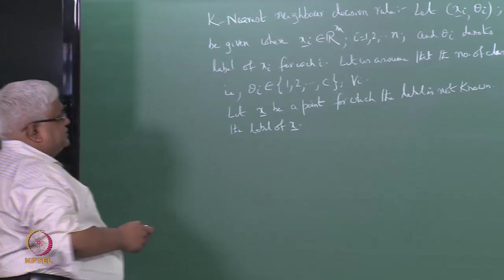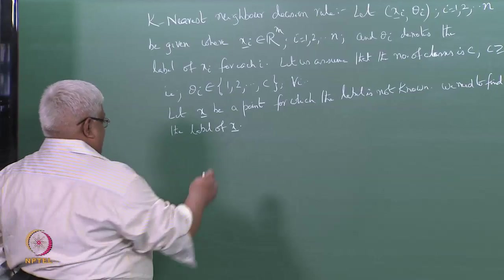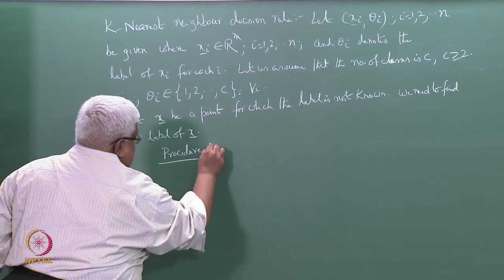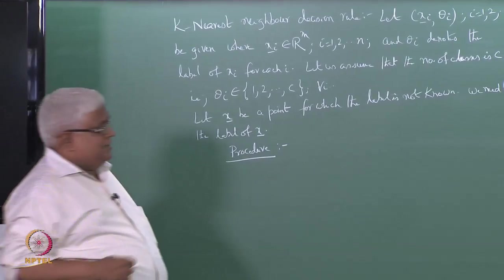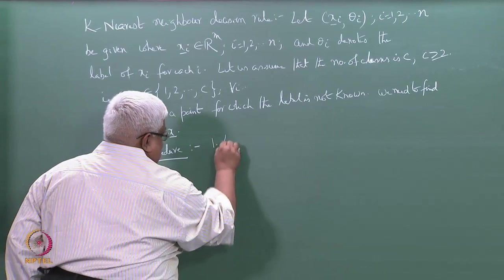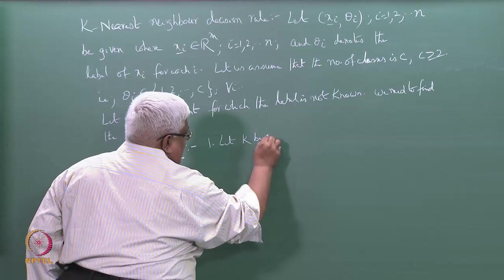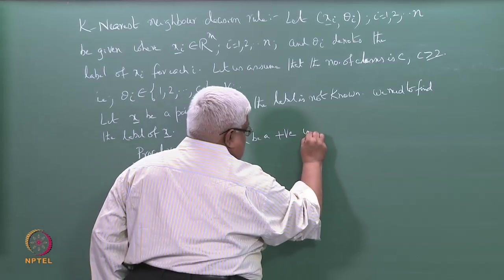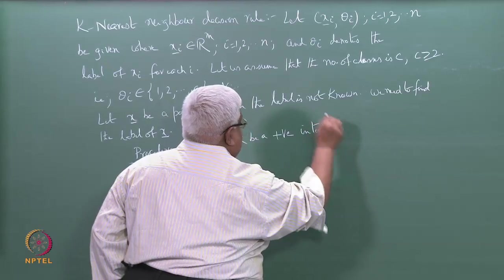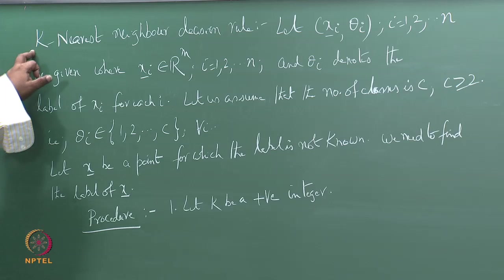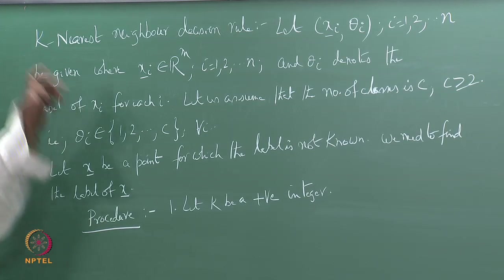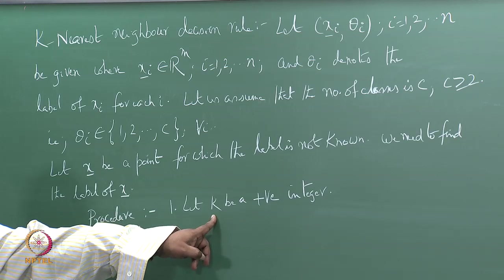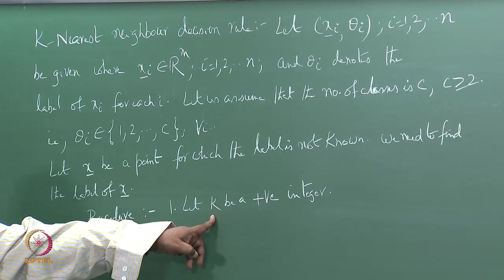The procedure is the following. The first step is: let k be a positive integer. We are talking about the k-nearest-neighbor decision rule, so we take a value of k. How to choose the value of k, we will come to later.